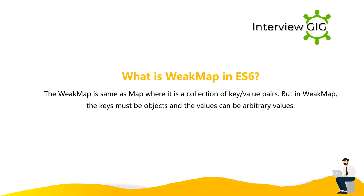What is a weak map in ES6? The weak map is the same as a map in that it is a collection of key-value pairs. But in a weak map, the keys must be objects and the values can be arbitrary values.